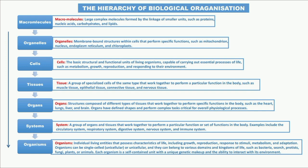These hierarchical biological organizations increase in complexity from macromolecules, to cells, tissues, organs, systems, and the organisms themselves. This was a brief explanation to help you understand the hierarchy before we discuss the four key levels in more detail.